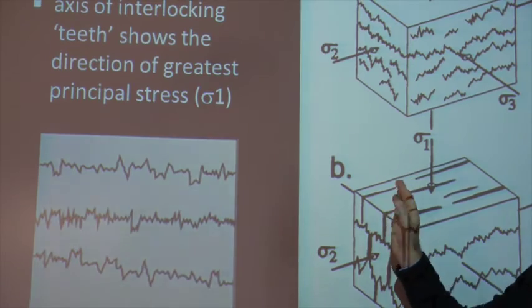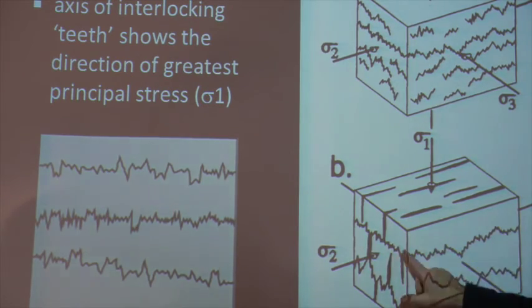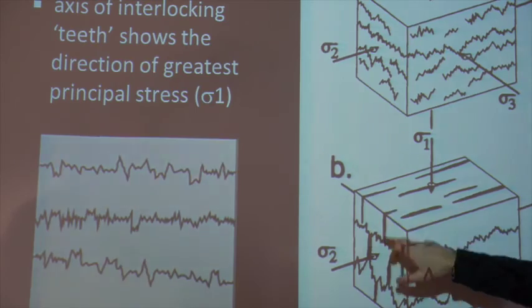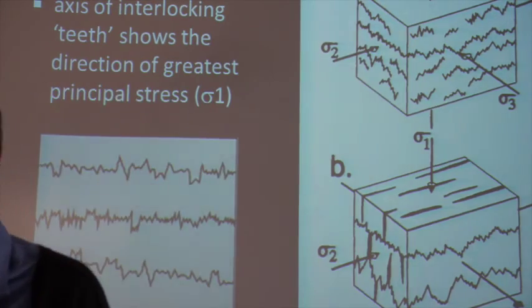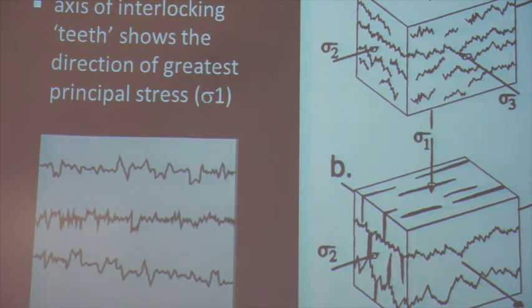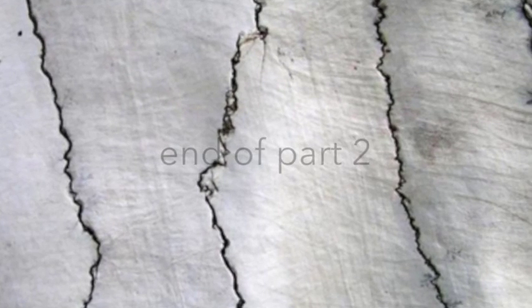When you have both stylolites and veins in the same rock — as in the limestone across the road — the stylolites tell you sigma-1 and the veins open in the direction of sigma-3, so together you can determine the full stress orientation. In a pure limestone, the evenly spaced regular stylolites you see here show how that lithology responds to stress by pressure solution. Whenever you deal with limestone in any deformed area, pretty much you'll find stylolites.